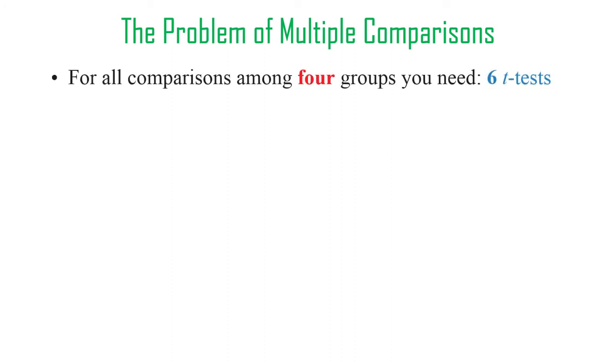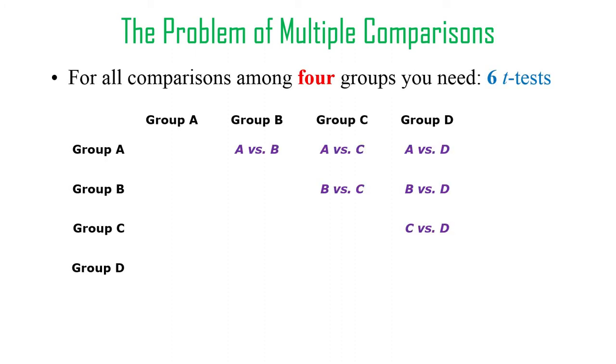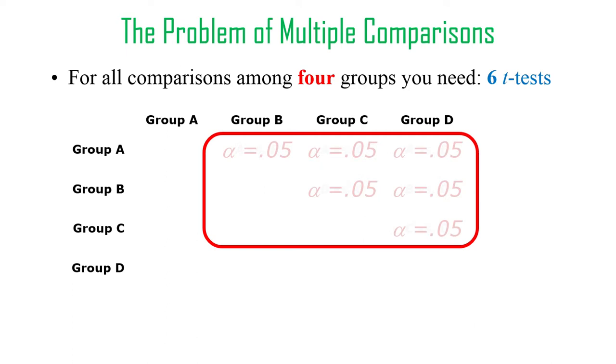What if we have four groups? Now we need six t-tests. Each of them has an alpha of 0.05. If we do all six of those t-tests, what's the true error rate, the family-wise error rate there? Now it's 0.27. Now we have over a one in four chance of making at least one Type 1 error.